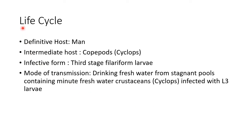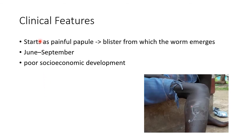Now let us see about the life cycle of Dracunculus. The definitive host is man. The intermediate host is Cyclops. The infective form is third stage filariform larva. The mode of transmission is by drinking fresh water from stagnant pools containing minute fresh water crustaceans, that is Cyclops, infected with L3 larvae.